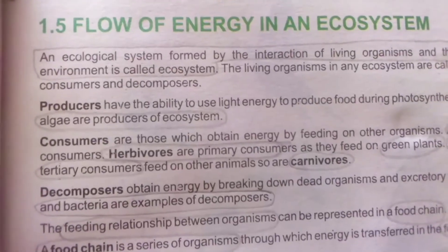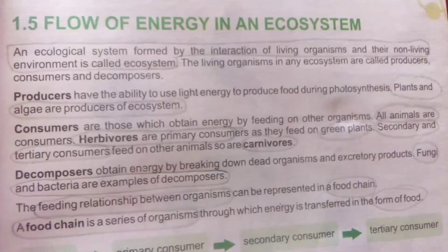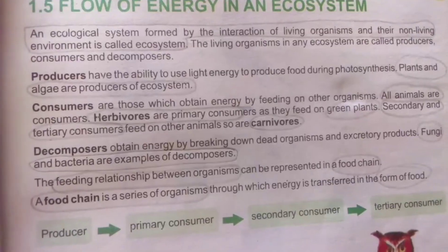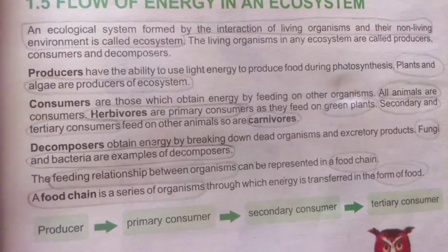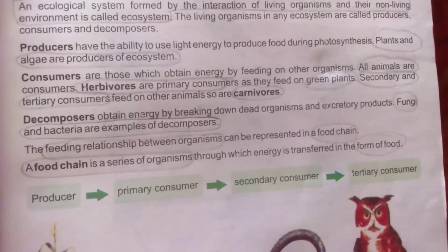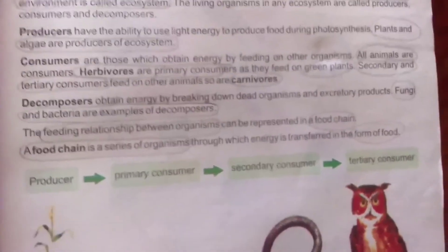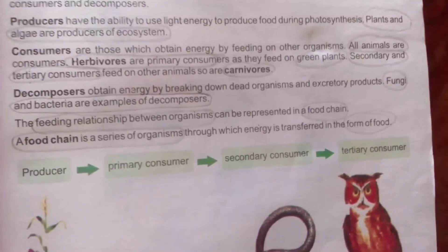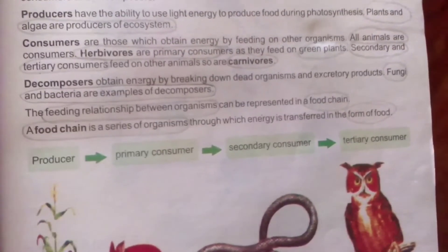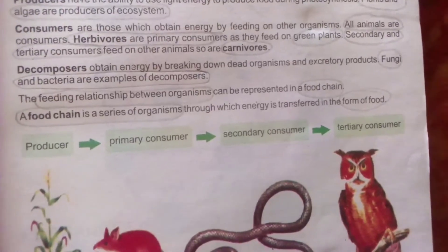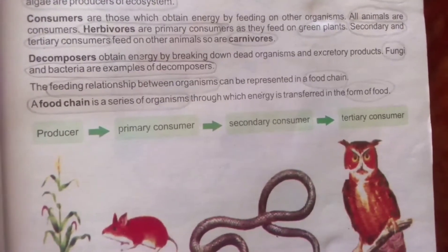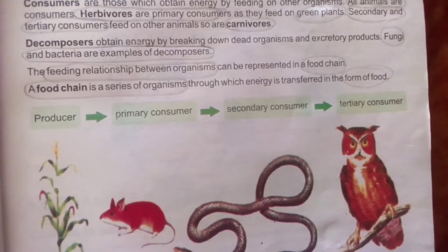An ecological system formed by the interaction of living organisms and their non-living environment is called an ecosystem. Producers are plants. All animals are consumers. Herbivores are primary consumers — they eat green plants. Secondary and tertiary consumers are carnivores. Decomposers are fungi and bacteria.